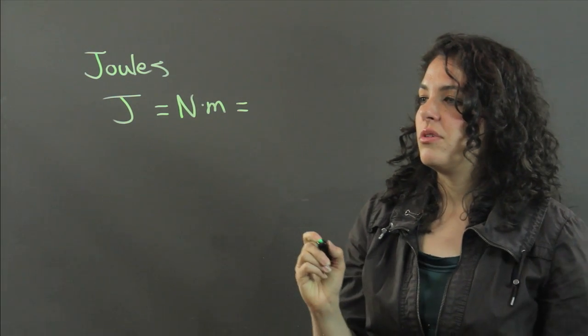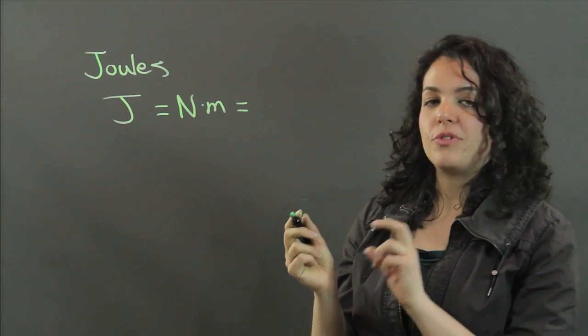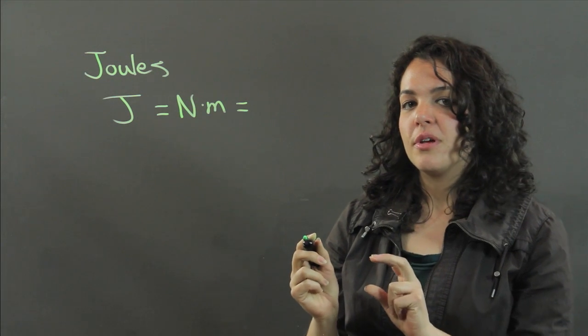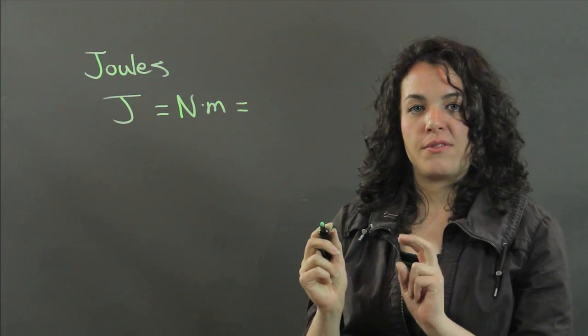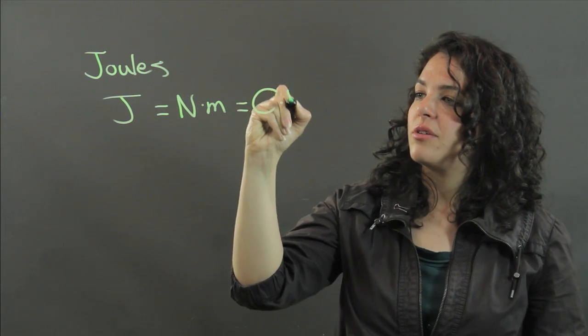One joule equals the amount of work used to move a charge of one Coulomb through a potential difference of one volt, so it can also equal a Coulomb volt.